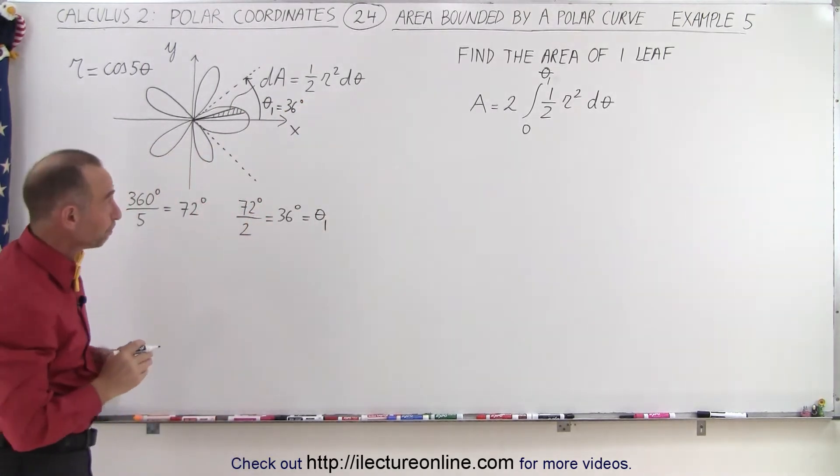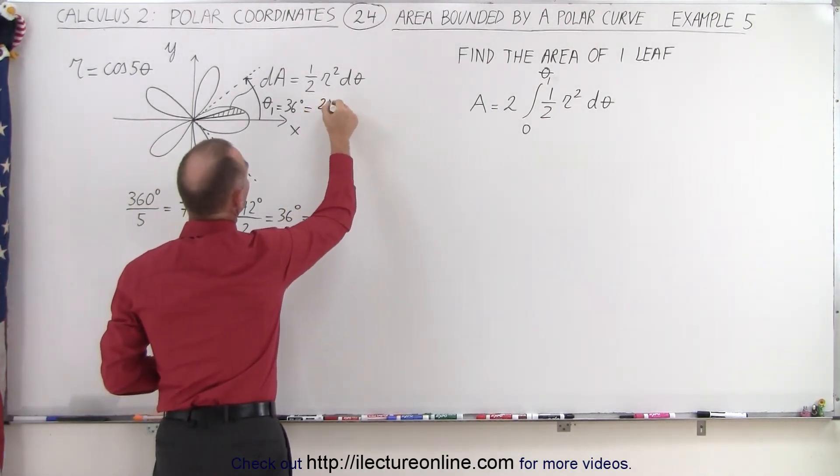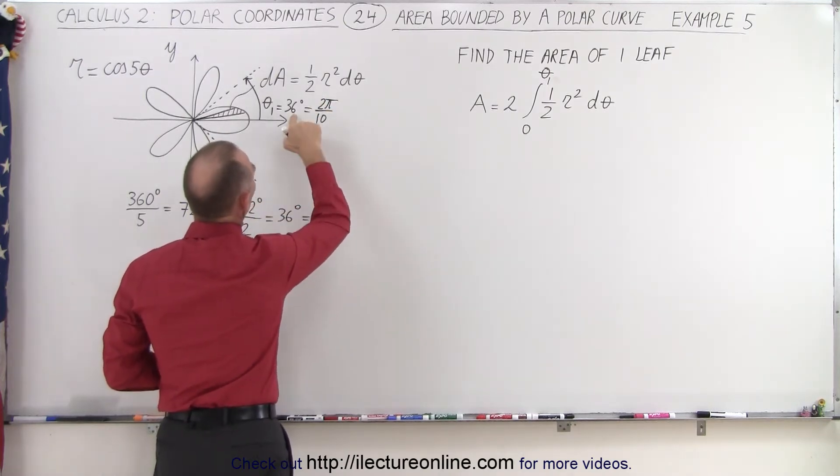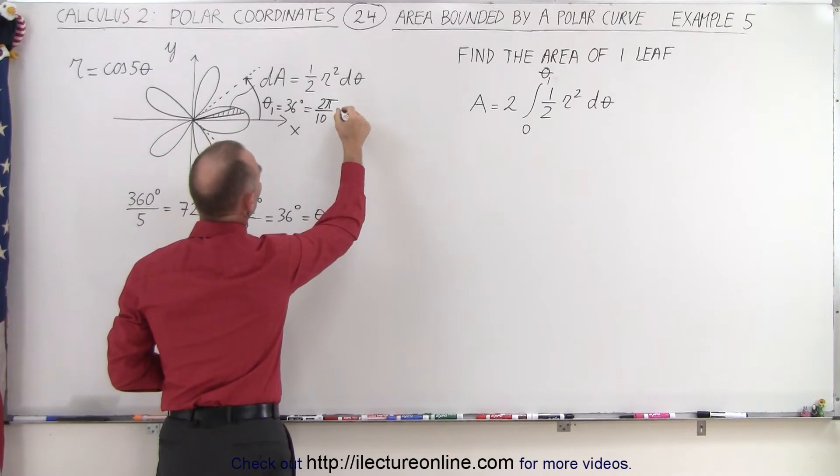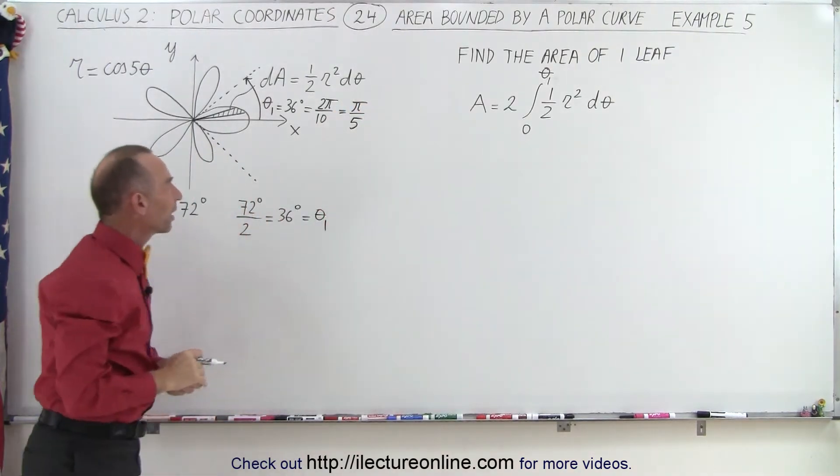Now we're ready to go. So 36 degrees, that would be 2 pi divided by 10, and because that's one-tenth of a full circle, it would be equal to pi divided by five.